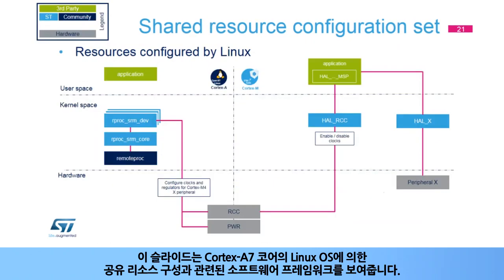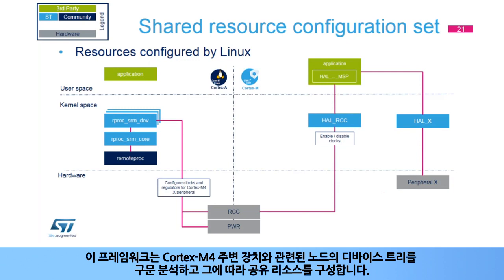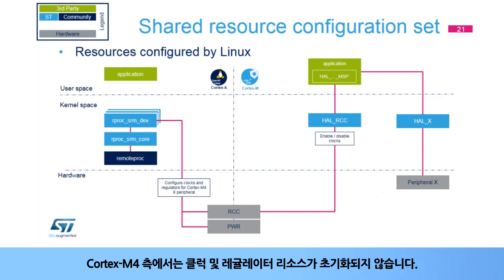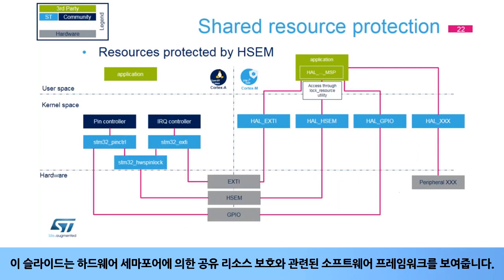This slide shows the software framework involved in the configuration of the shared resources by the Linux OS on the Cortex-A7 core. The Remote Processor System Resource Manager, or RPROC SRM framework, has been developed by ST to declare and configure shared resources used by the Cortex-M4 core to operate the assigned peripherals. This framework parses the device tree for nodes associated to the Cortex-M4 peripheral and configures the shared resources accordingly. An SRM device driver instance is enabled per subnode. On the Cortex-M4 side, the clock and regulator resources are not initialized; only the peripheral clock is gated as clock gating registers are Cortex-dependent.